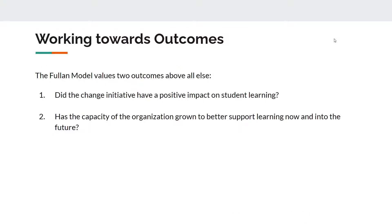Recall, as we discussed in the beginning of the presentation, the Fullan model is engineered to focus on two specific outcomes of any change initiative in the educational environment: How did the change have a positive impact on student learning? And has the school itself made adjustments to grow the capacity necessary to continue to improve student learning? These are the measures of success that any change initiative will be measured against in this particular model.